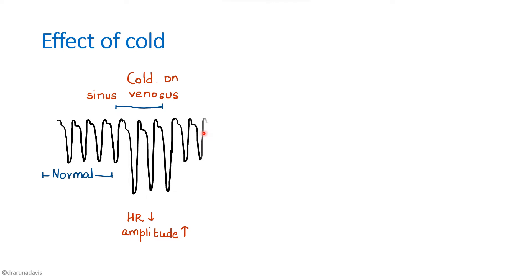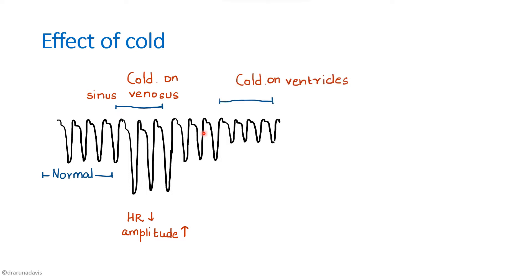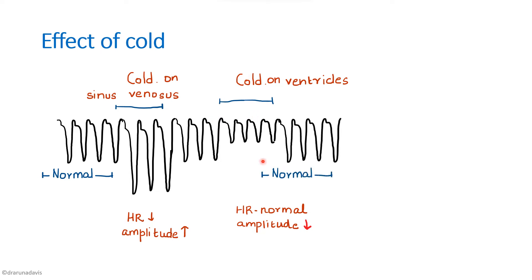After the normal cardiogram, we see the effect of cold on the ventricles. Here the heart rate is normal, but the amplitude has decreased. When there is cold on the ventricles, the metabolic rate is decreased and the force of contraction decreases — that is why we see a decreased amplitude. Then we draw the normal cardiogram again. From this graph, we can see that heart rate is determined by the sinus venosus and force of contraction is determined by the ventricles.